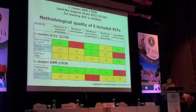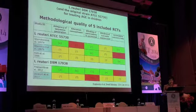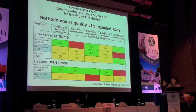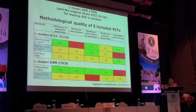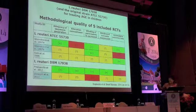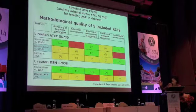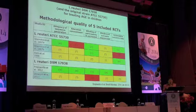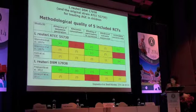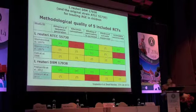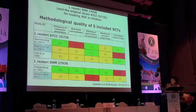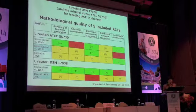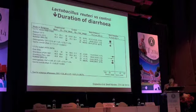For this particular strain we identified five randomized controlled trials. Part of every systematic review is assessing the methodological quality of included trials. On the slide, green indicates no risk of bias, red indicates high risk of bias, and yellow indicates some questions or methodological concerns. Three trials were on the mother strain and two trials were on the daughter strain, Lactobacillus reuteri DSM 17938.